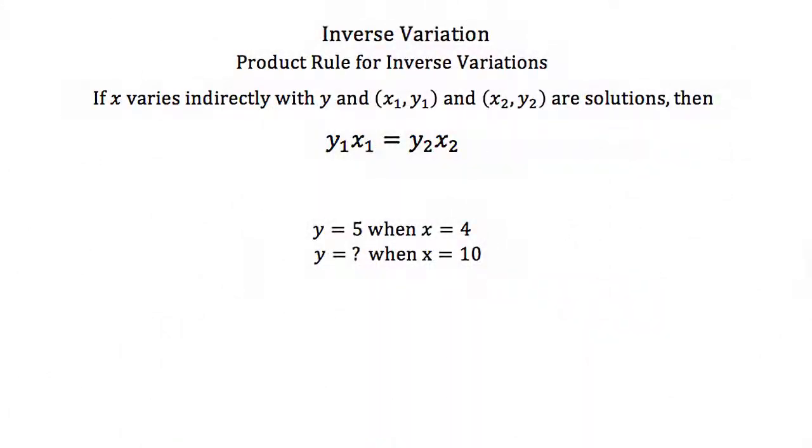The last thing we'll cover is the product rule for inverse variations. If x varies indirectly with y and we have two points on the graph, then y1 times x1 equals y2 times x2. Remember, y equals k over x, and multiplying x over gives y times x equals k. So any y and its respective x must make this equation equal k.